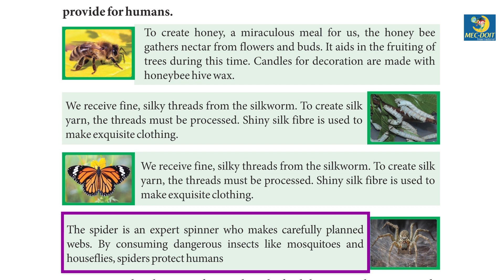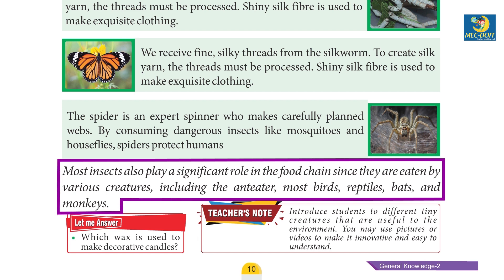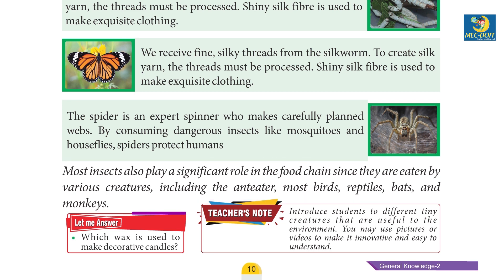By consuming dangerous insects like mosquitoes and house flies, spiders protect humans. Most insects also play a significant role in the food chain, as they are eaten by various creatures including the anteater, most birds, reptiles, bats, and monkeys. Let me answer: which wax is used to make decorative candles?